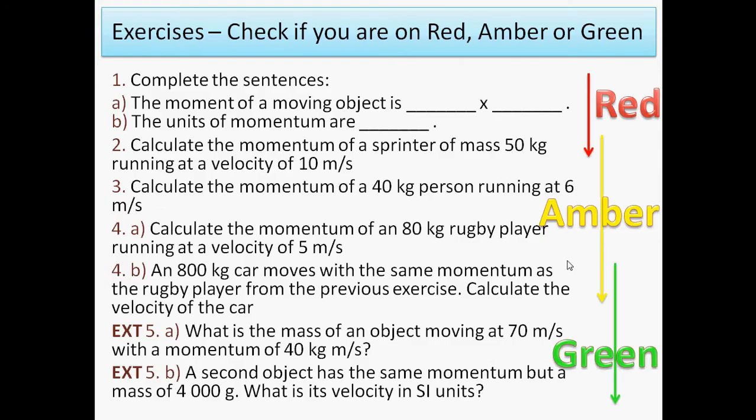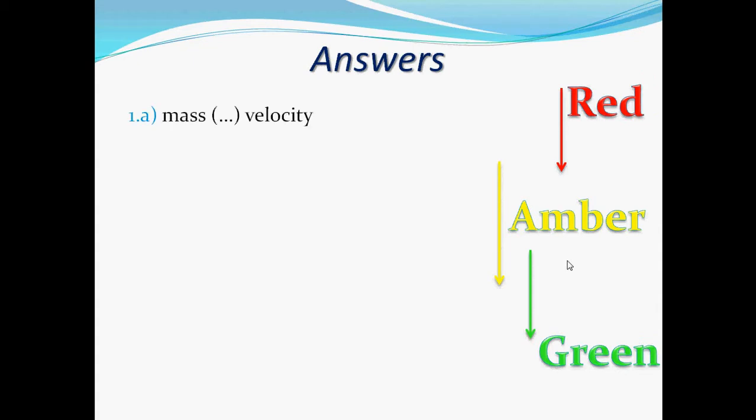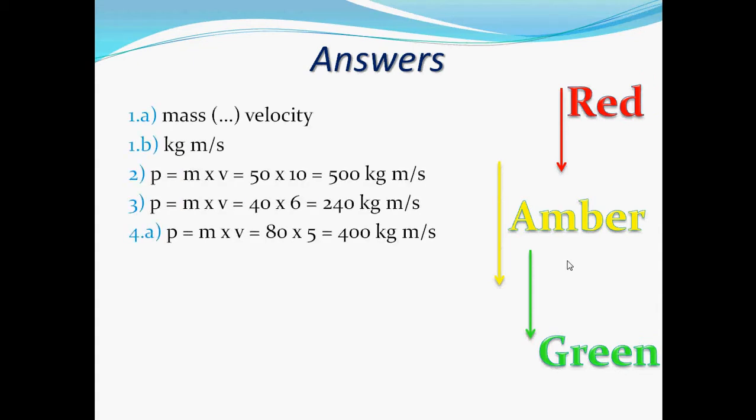Calculate the momentum of a rugby player with a mass of 80 kilograms running at a velocity of 5 meters per second. Again, multiply 80 by 5 because momentum is mass times velocity. This is going to give you 400 kilograms meters per second.